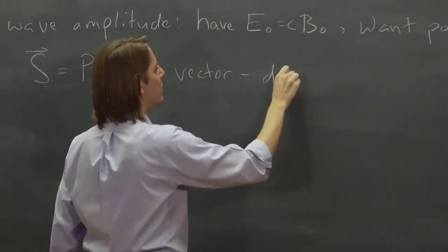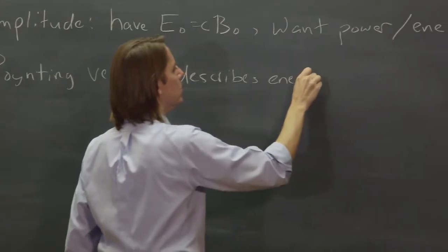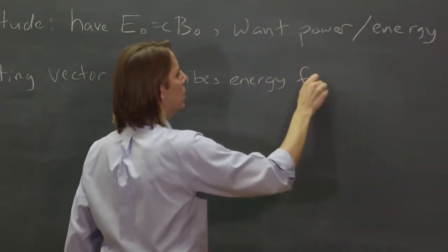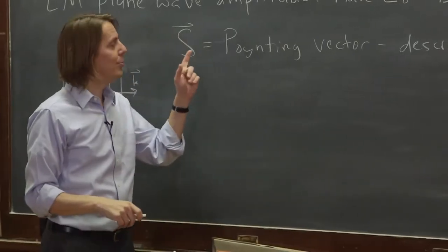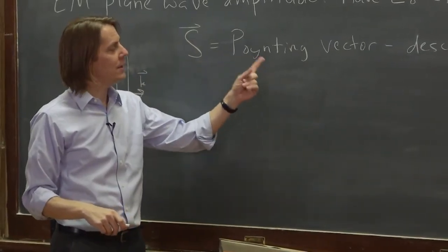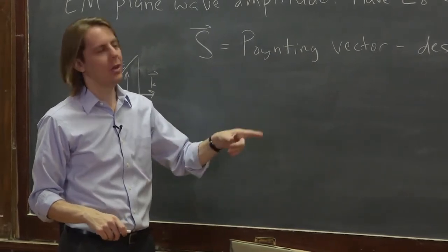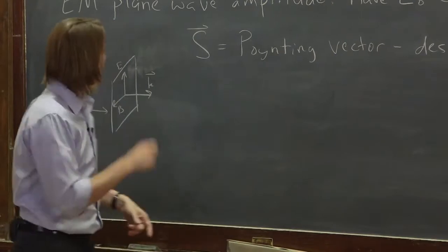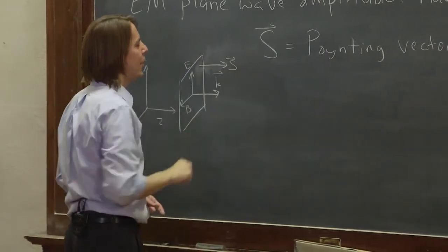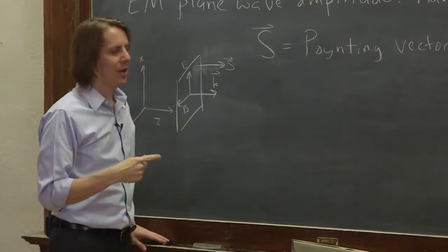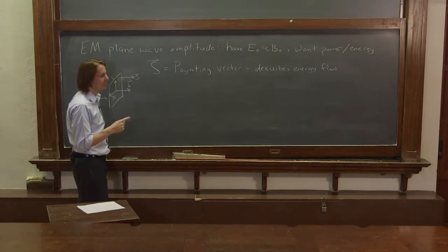The Poynting vector describes energy flow. And I didn't misspell it — it's called the Poynting vector, but it's P-O-Y-N-T-I-N-G, because it's named after John Henry Poynting, who developed the concept. It does point in the direction of the K vector to describe energy flow, but the spelling is P-O-Y-N-T-I-N-G. I'm sure he had a sense of humor about it.